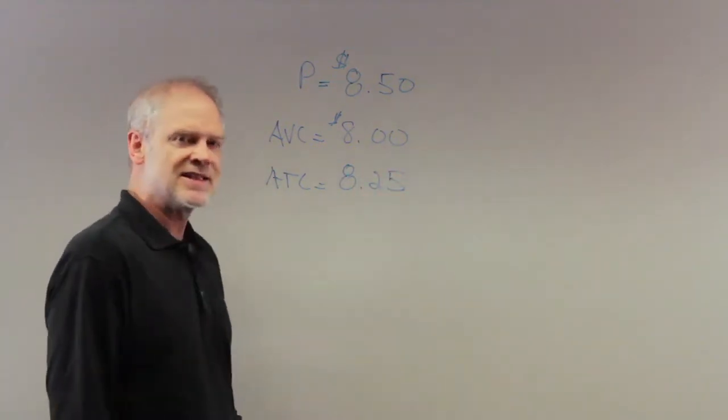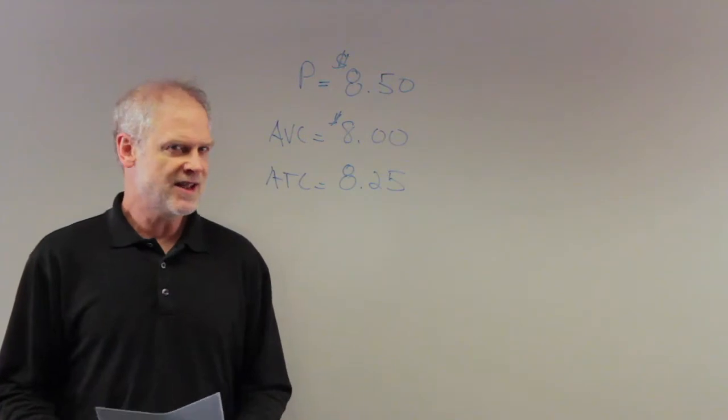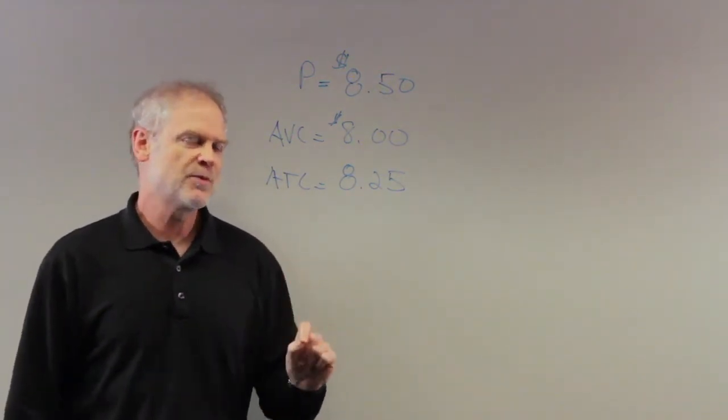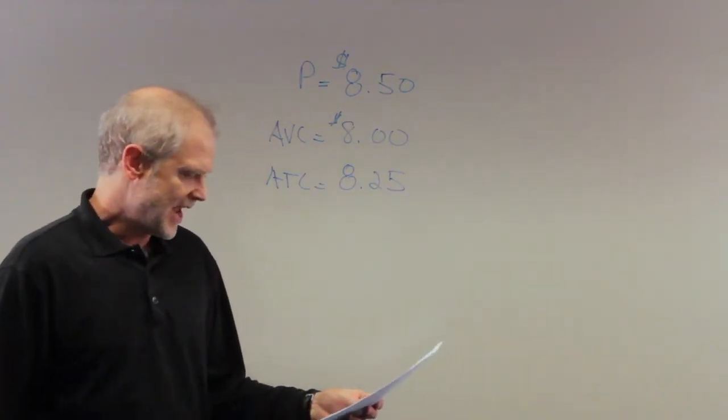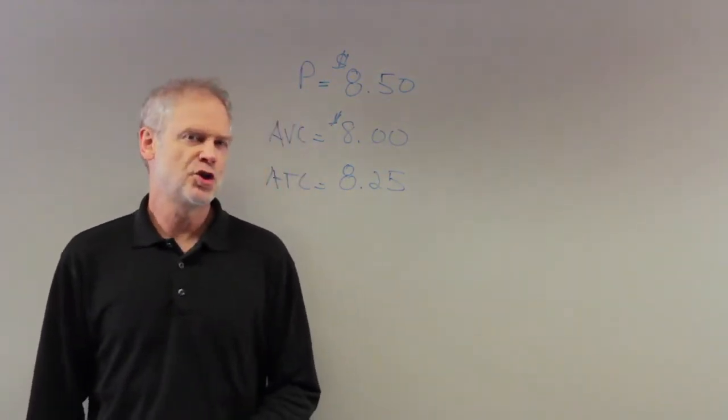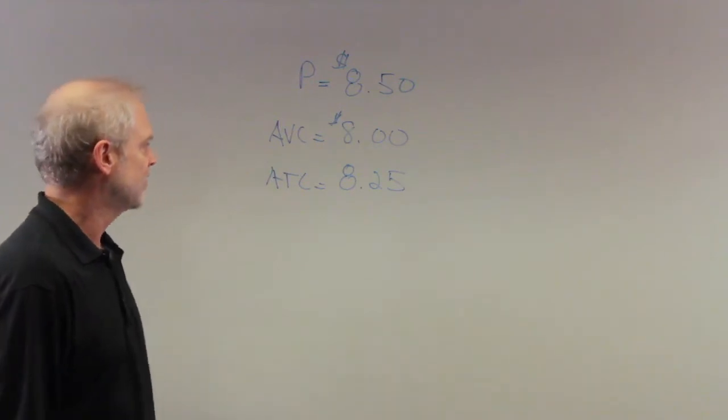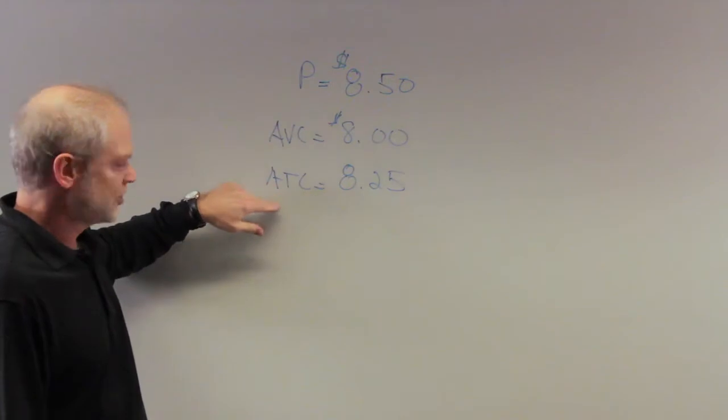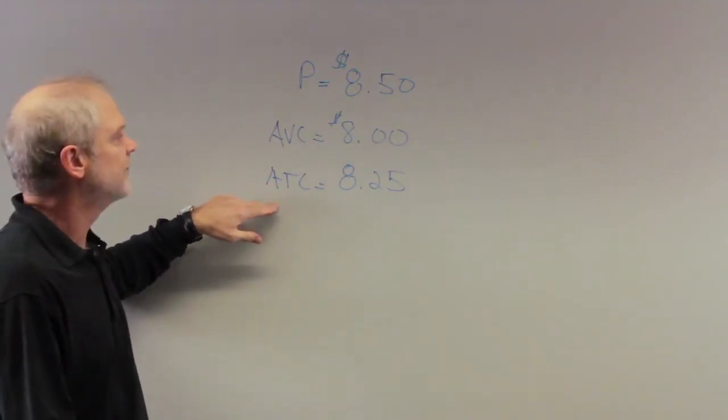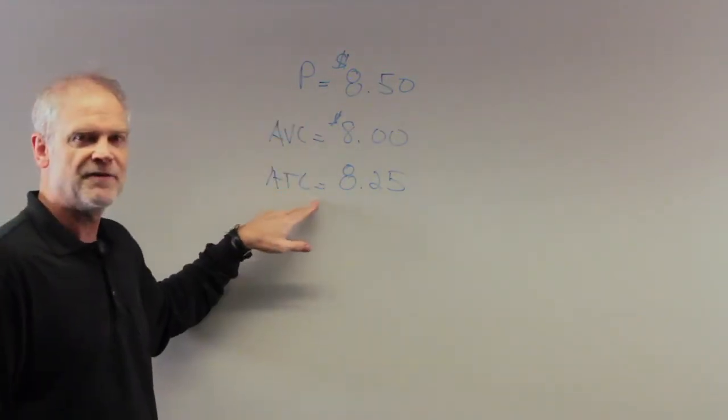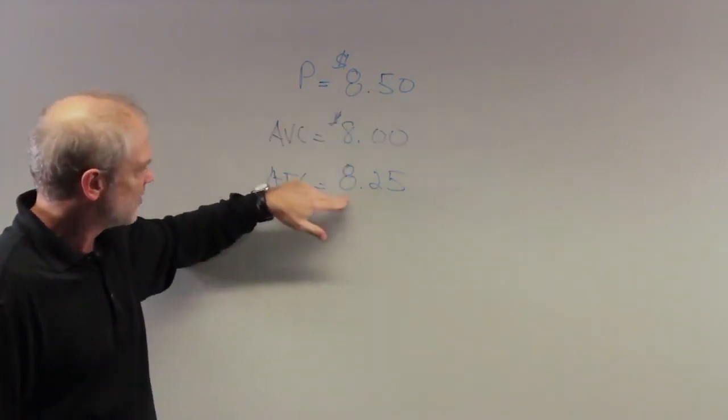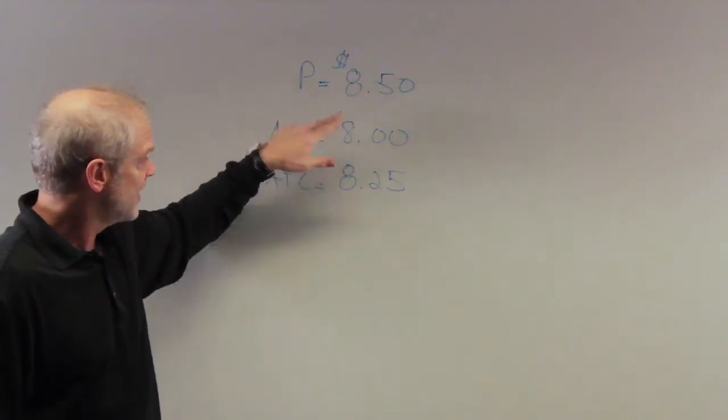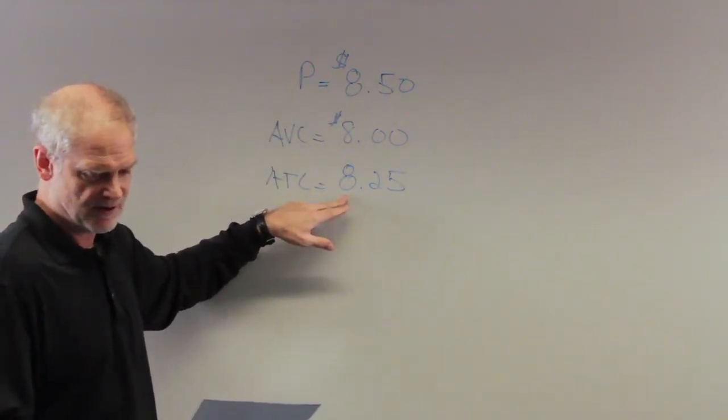Now, they're telling us this is the profit-maximizing level of output. In other words, they're telling us this person can't do any better in terms of where they should produce than this. So, what are they asking us? First, if the price is $8.50 and your average total costs are $8.25, then clearly you're making $0.25 per unit. So that's not bad. You're making above-normal returns.